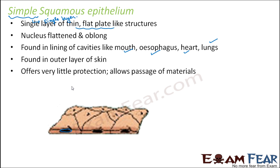They are also found in the outer layer of skin. They offer very little protection, however they allow passage of materials. Each type of epithelial cell has its own specific function. Epithelium as a whole performs basically three functions: protection, absorption, and secretion. Simple squamous epithelium acts as lining of cavities, and their main function is to allow passage and transfer of materials through them.